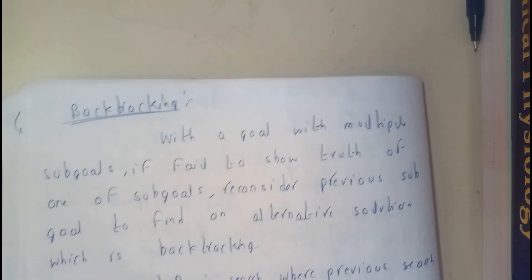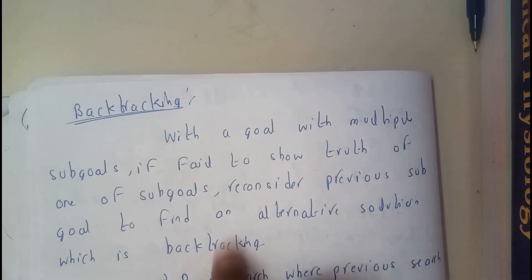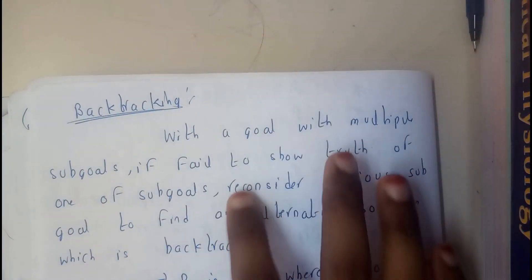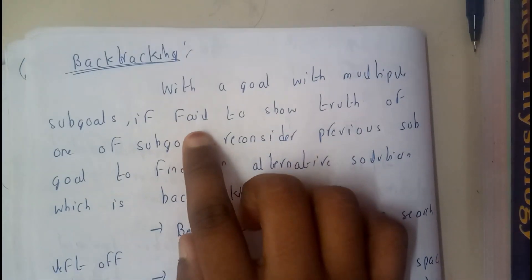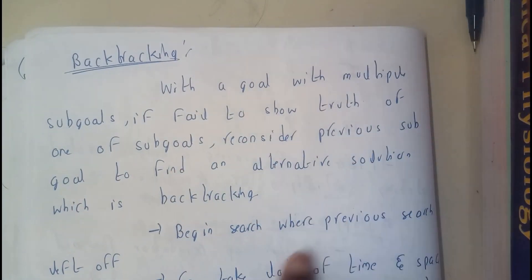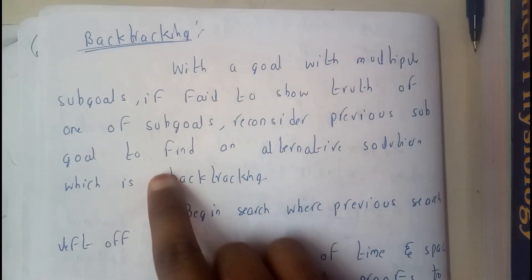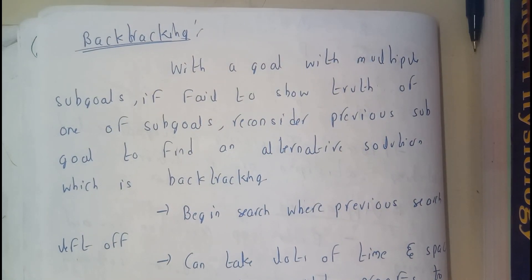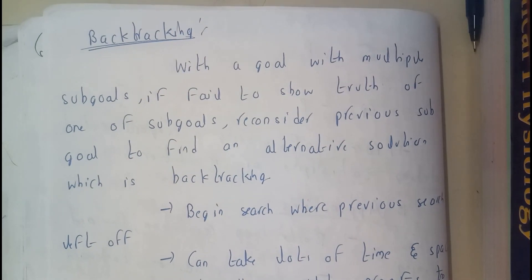Moving on to backtracking — backtracking is one of the key concepts of Prolog, used in sub-goals. With a goal that has multiple sub-goals, if we fail to show the truth of one sub-goal, we reconsider the previous sub-goal to find an alternative solution. This is the concept of backtracking.